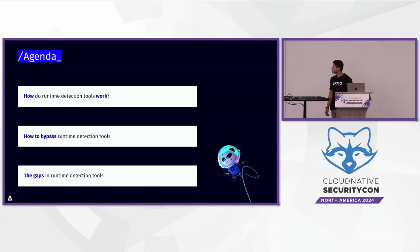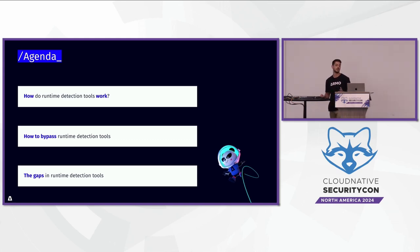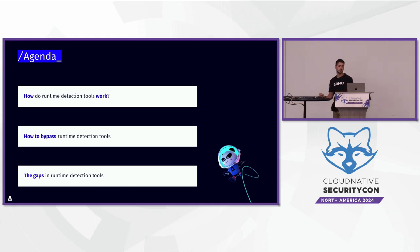The agenda for this talk: we're going to first see how runtime detection tools work. Then we're going to see some ways to bypass them. And finally, we're going to talk about the gaps in runtime detection tools and the way I see this gap in specific ways of implementation.